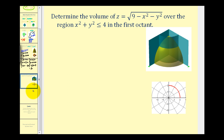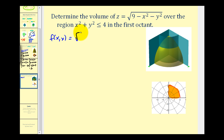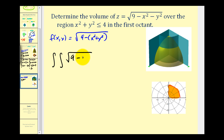Let's take a look at one more example. We want to determine the volume of the solid under f(x, y) = √(9 − x² − y²) over the region x² + y² ≤ 4 in the first octant — a circle of radius 2, but only in the first quadrant. We convert to polar by replacing x² + y² with r², giving f(r, θ) = √(9 − r²). Our double integral has √(9 − r²) with the extra factor of r, then dr dθ.